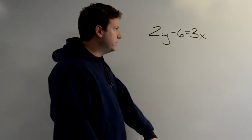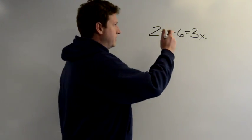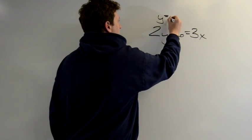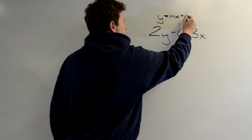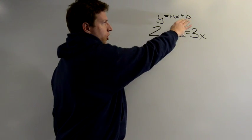So right now, though, I'm going to go ahead and rearrange it and put it into what's called slope-intercept form. y equals mx plus b, right? So I want it to look like this.